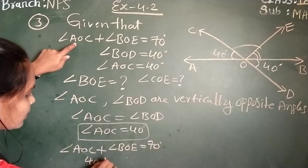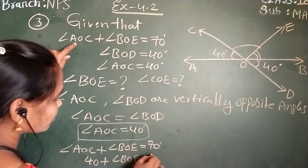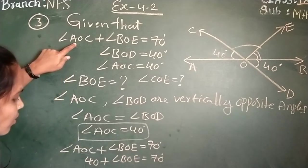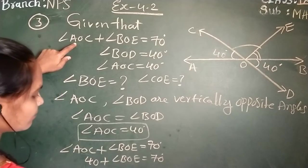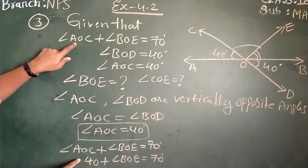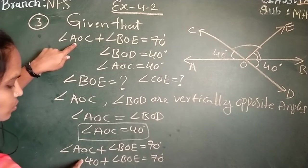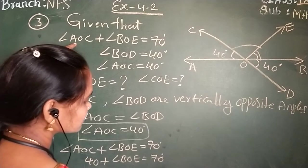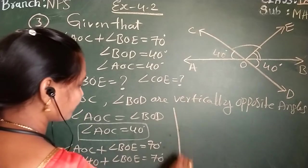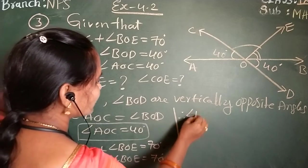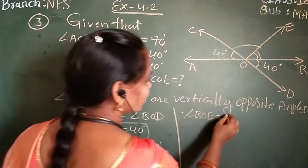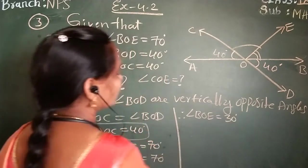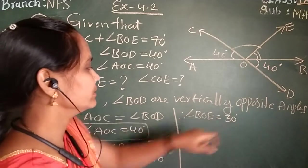Angle AOC already you know is 40 plus angle BOE, which we need to find out. Now, angle BOE equals 70 minus 40. Therefore, angle BOE is 30 degrees. Angle BOE we got 30 degrees.